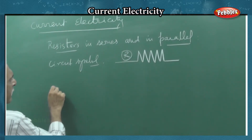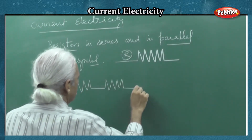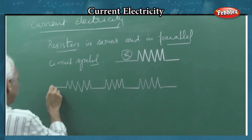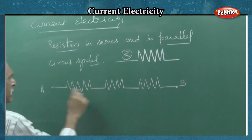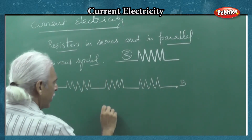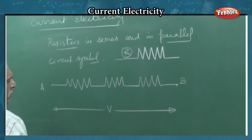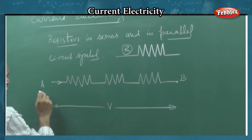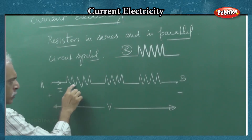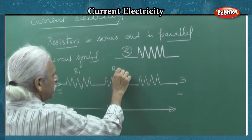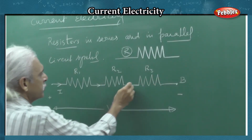Now, we will take up a circuit where the resistors are in series. Let us take up three. Between the point A and B, I apply a potential difference of V. So, there is a current I that flows through resistance 1, resistance 2, and resistance 3 connected between the two points A and B. The same current flows in series.